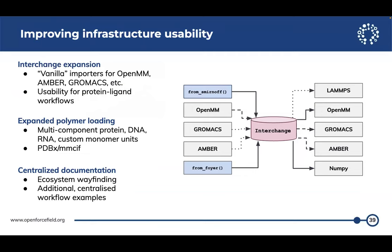Our big goal for the coming year is to improve our infrastructure's usability. We have amazing things coming out for the force fields and we want to get those force fields into as many hands as possible. We want to expand interchange to have vanilla importers for OpenMM, Amber, and GROMACS — for standard Lennard-Jones bonds, constrained or unconstrained — the sage-style parameters. We want to make protein-ligand workflows really easy. We can cut down lines of code for a modified amino acid by about 60, and we want to keep cutting. We want expanded polymer loading, and because PDB codes are running out and there are other format problems, we want to add support for PDBx and mmCIF. We also want a major push to improve and centralize documentation so new users can easily figure out what tools to use and how to get started.